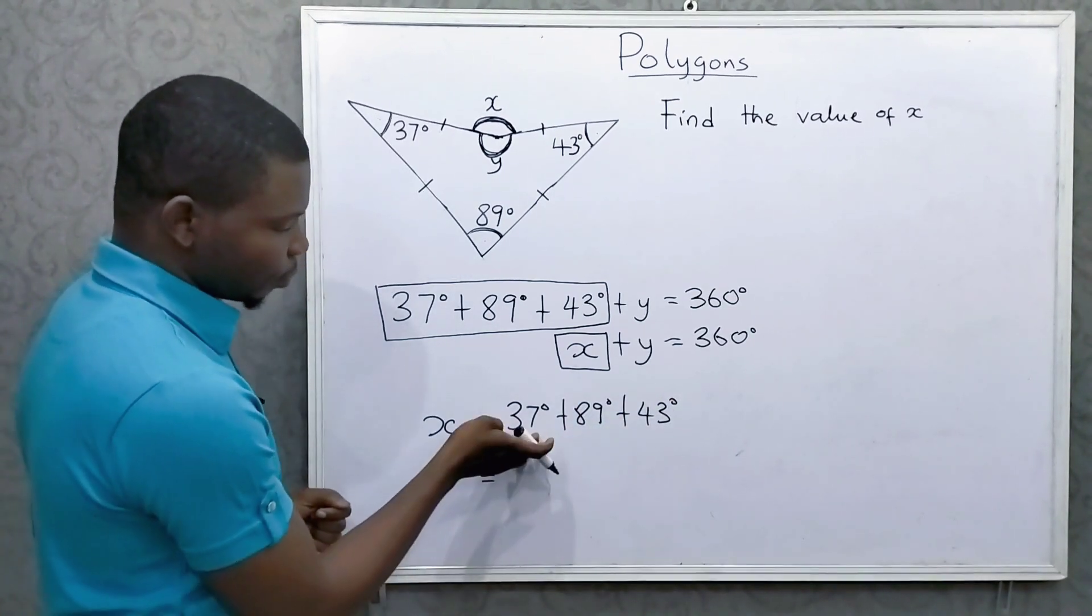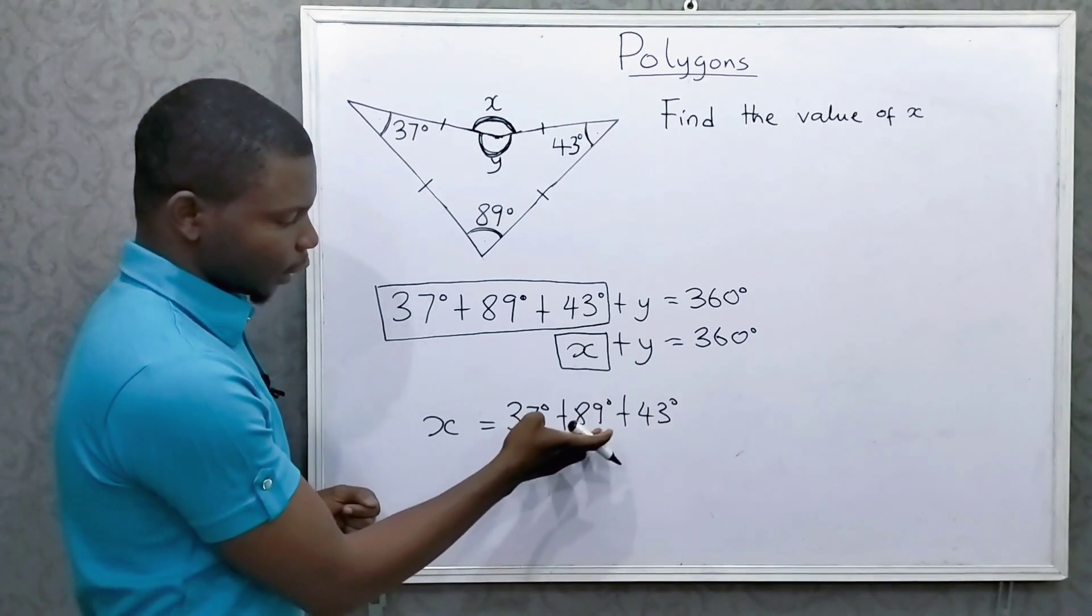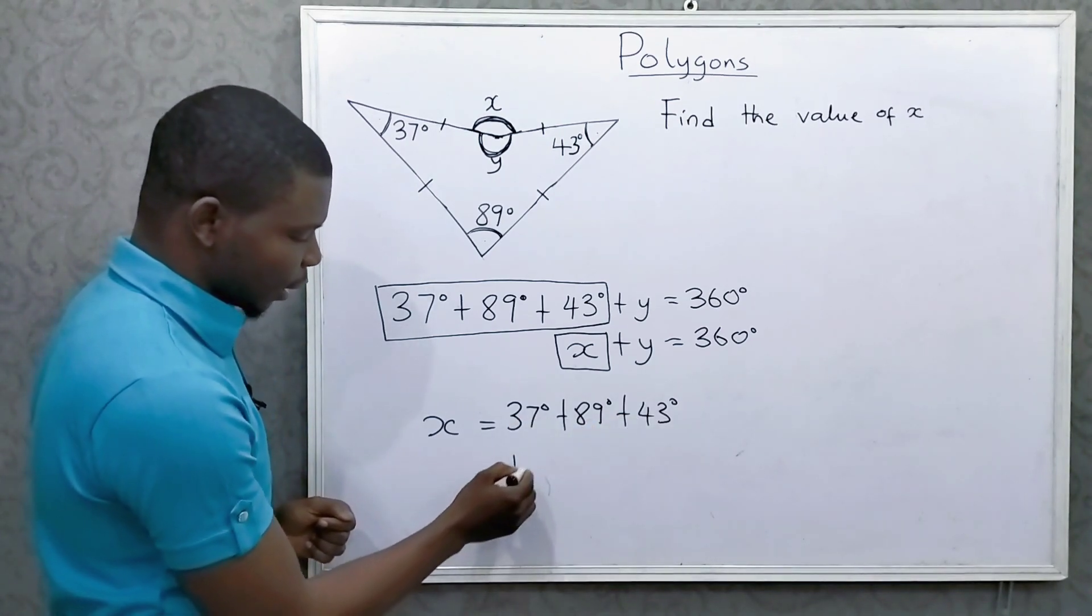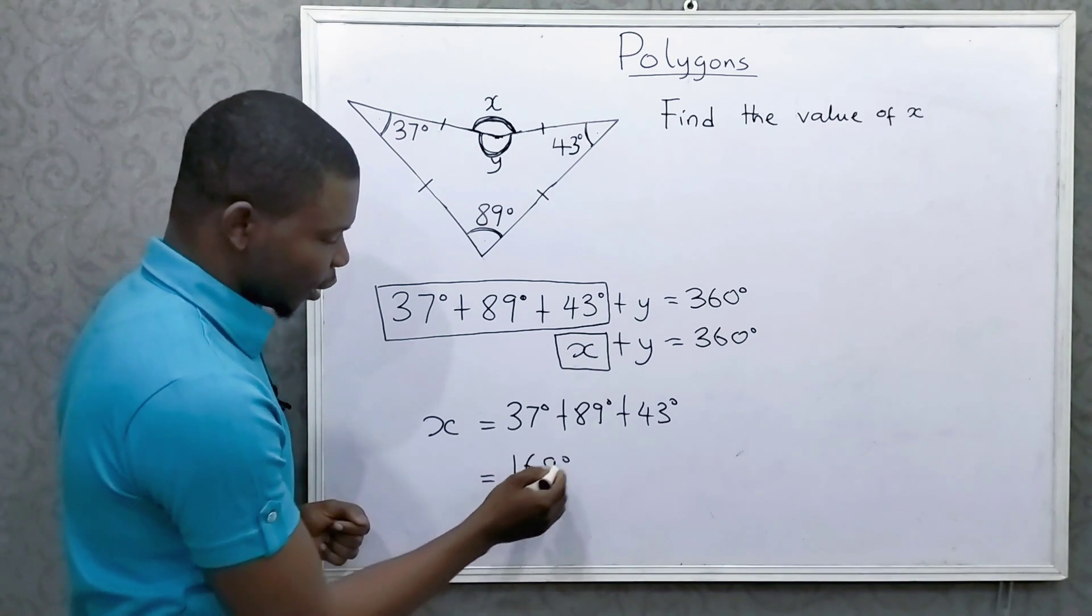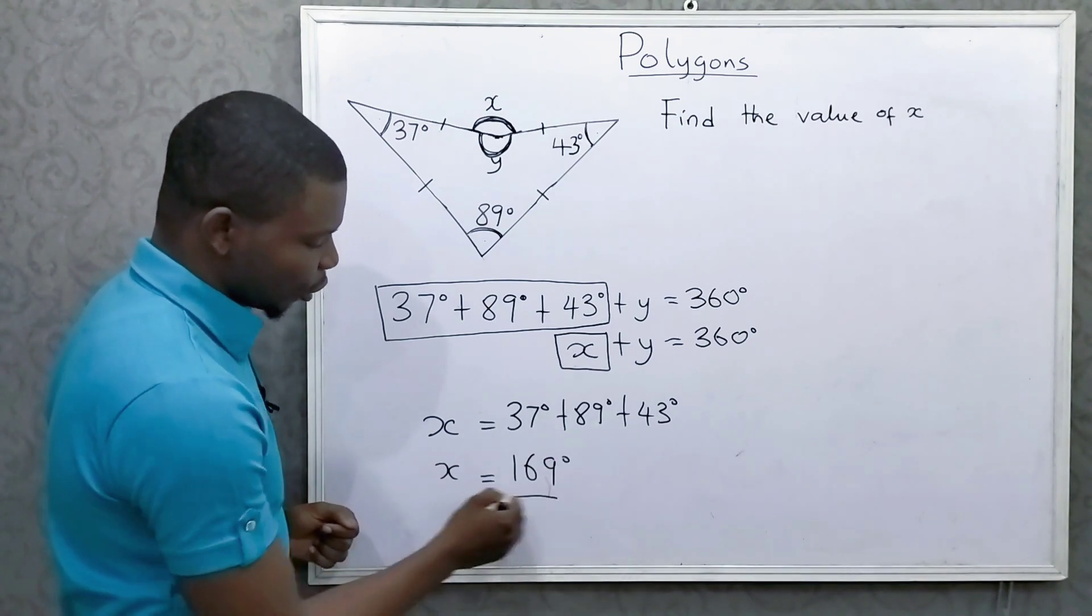And we know that 37 plus 43 is 80. Then plus 89. That would be 169. So this is the value of x.